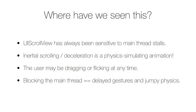UIScrollView has demonstrated this problem forever, though it's not necessarily obvious that it's related to these other types of interactions. Inertial scrolling and the deceleration effect of scroll views is a physics-simulating interaction — it's a decay animation that POP makes very easy to implement directly. There just hasn't been an API that exposes doing this; it's internal to the implementation of scroll view that implements that progressive per-frame deceleration.